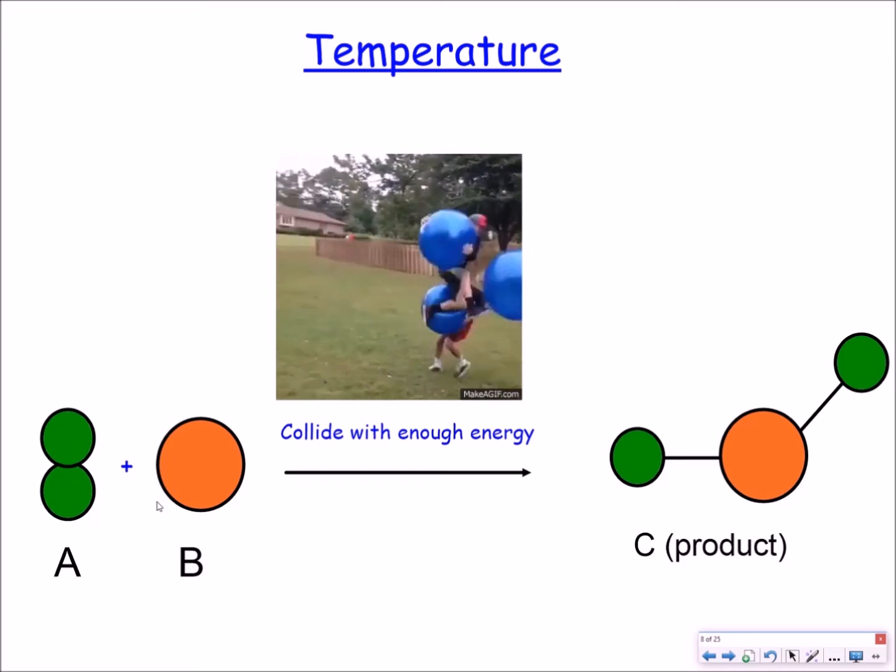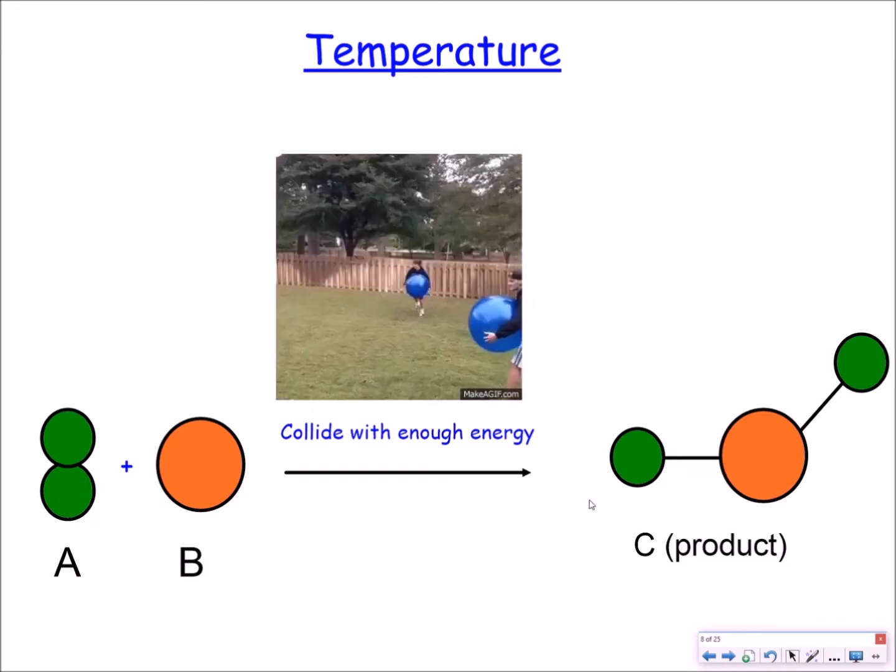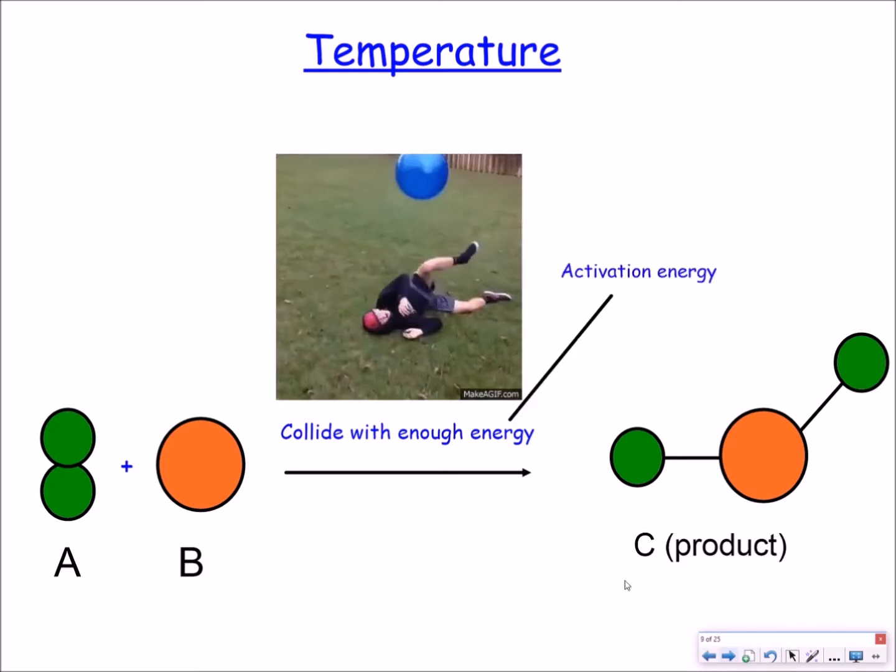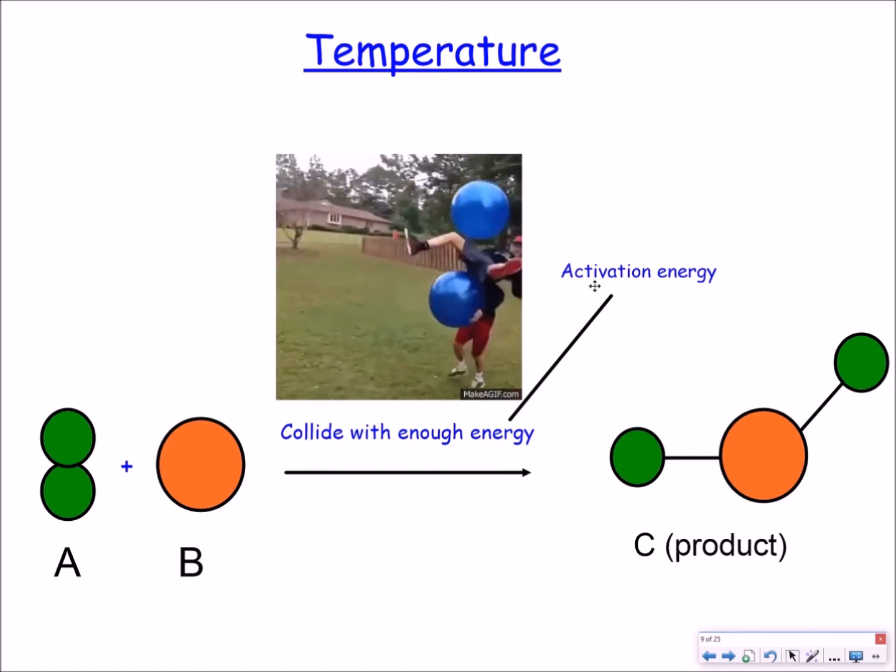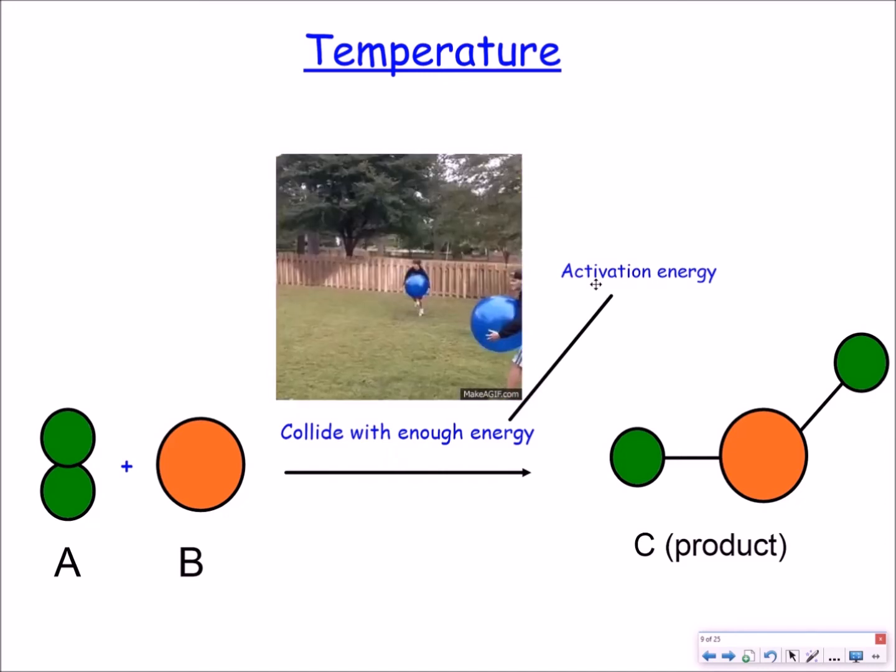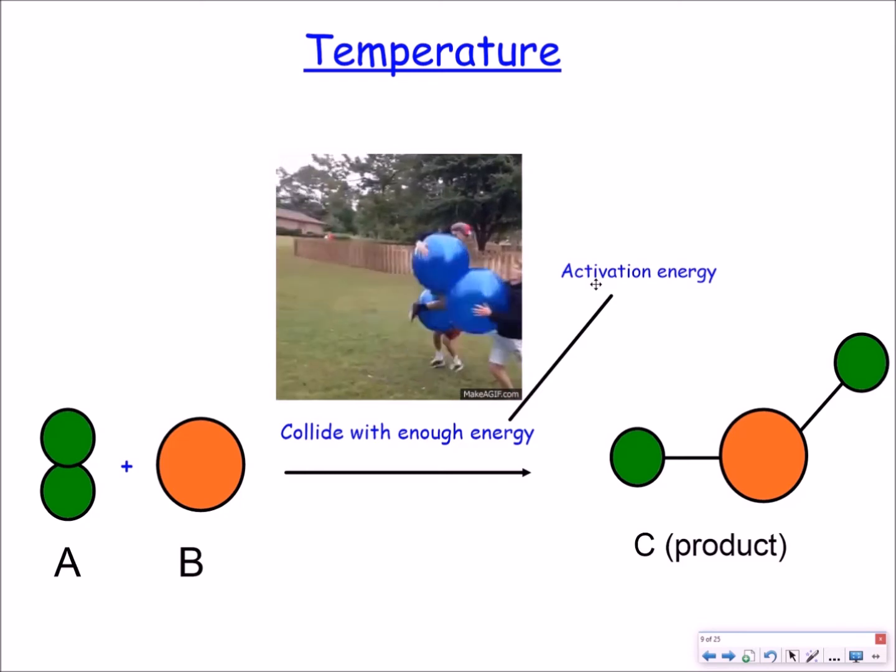So here's an example. I've got A plus B reacting to give us our product C. Now this energy over here is also known as the activation energy, which is the minimum amount of energy required for a reaction to take place.